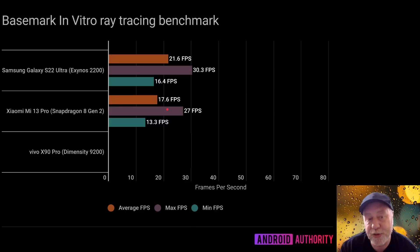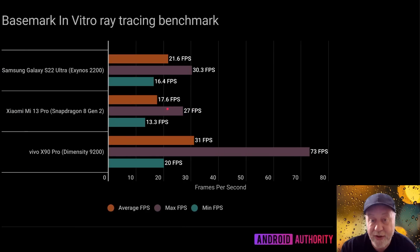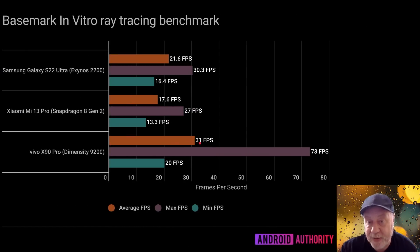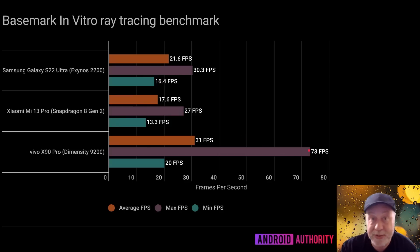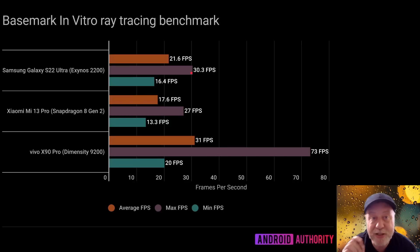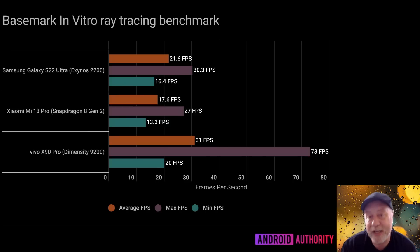The next result is even more surprising. The Vivo X90 Pro features the Dimensity 9200, which has the Arm Mali Immortalis GPU — and that of course supports ray tracing. The average is 31 frames per second, significantly better than the 17.6 from the Snapdragon and better than the Exynos 2200. It peaked at 73 fps in easier scenes, and even in the hardest scenes only dropped to 20 fps — better than the Snapdragon's average. The Immortalis GPU is clearly the best at ray tracing right now.